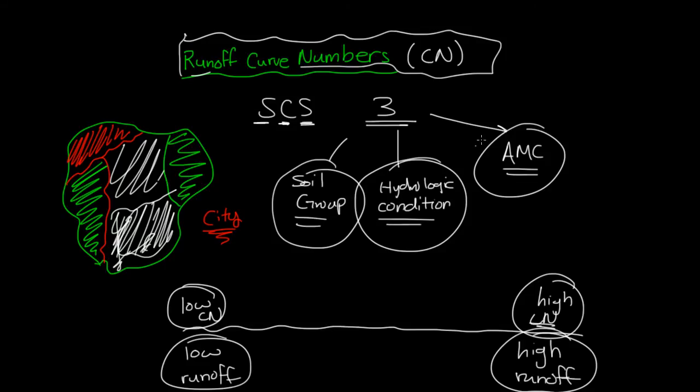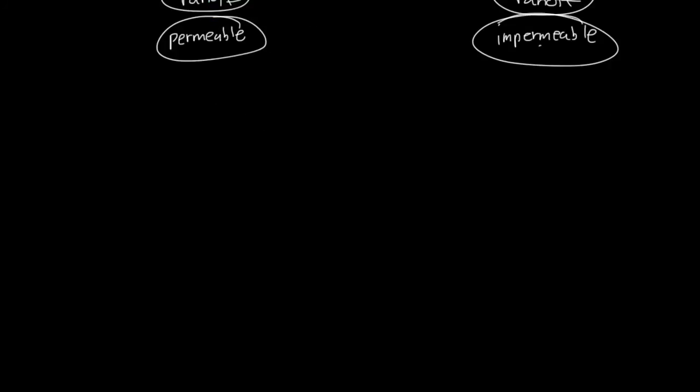When we study a certain site in hydrology and we want to figure out what the runoff conditions are, we use something called the runoff curve numbers. Remember, the runoff curve numbers are dependent on three different things: soil groups, hydrologic conditions, and the antecedent moisture content. In this video, we'll talk about the soil groups.